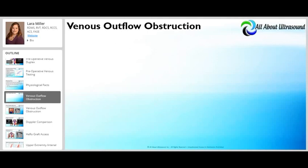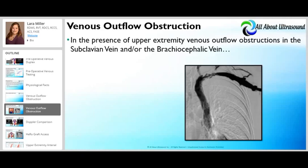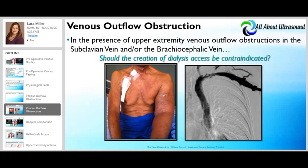Laura Miller will now explain venous outflow obstruction. In the presence of upper extremity venous outflow obstructions in the subclavian vein and/or the brachiocephalic vein, we have to ask: should the creation of a dialysis access be contraindicated? This can lead to some pretty significant complications for patients.